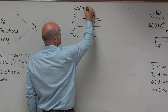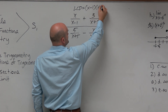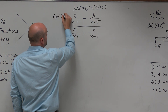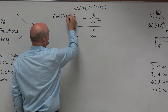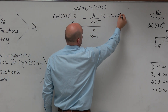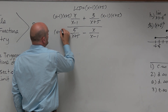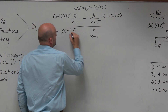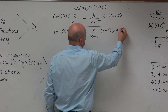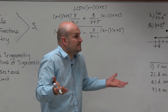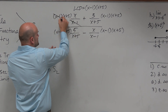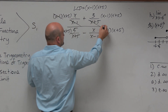The LCD in this case is just the product of the two denominators. So I said, just multiply the LCD times everything — every single term or expression gets multiplied by the LCD. What's so nice about this method is when you multiply by this, all these denominators divide out.